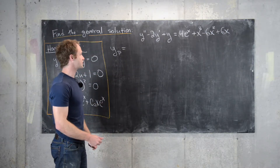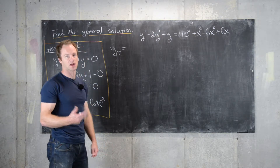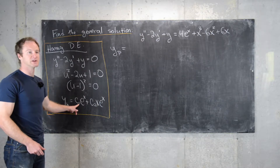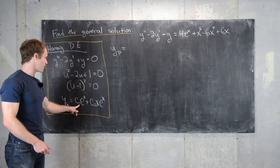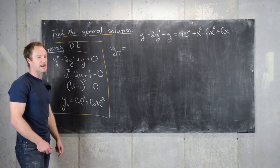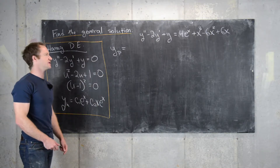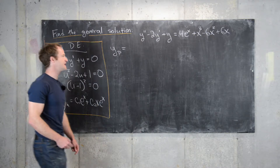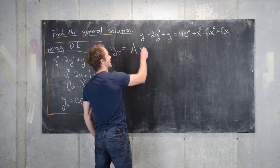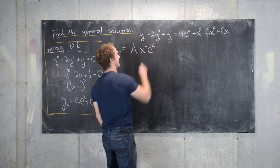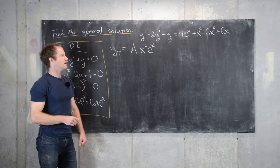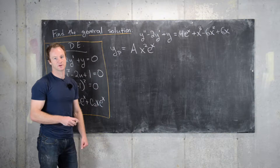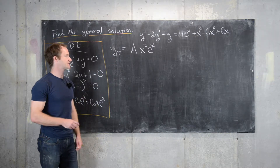A good first choice for the exponential part would be a constant multiple of e^x, but that's part of the homogeneous solution. Taking inspiration from Euler's trick, we try x·e^x — but that's also in the homogeneous solution. So we continue and guess x²·e^x for the exponential portion of the particular solution.